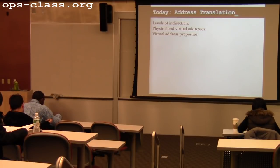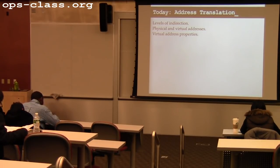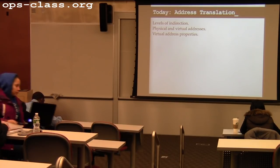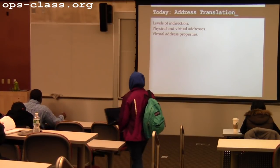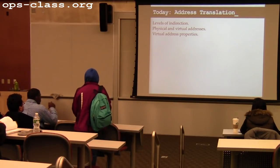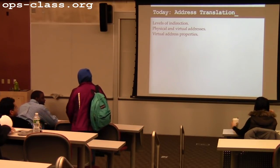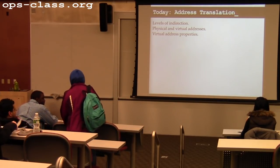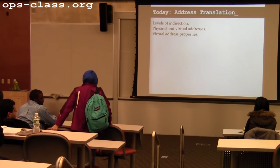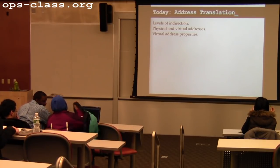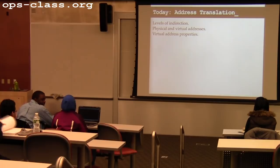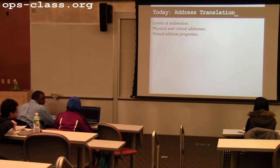We looked at problems with multiplexing physical memory on the machine. And we came up with this great idea that we could provide every process with this really uniform, nice view of memory. But we don't know how to do that. So today we're going to talk about one of the main methods that allows us to do this. It's a neat trick and a really powerful idea.